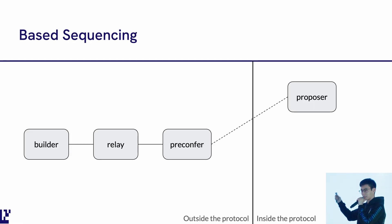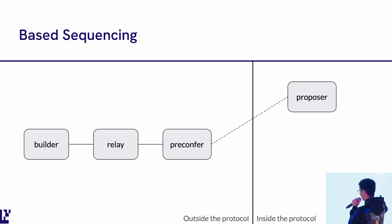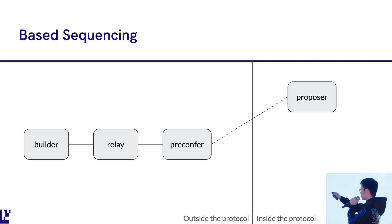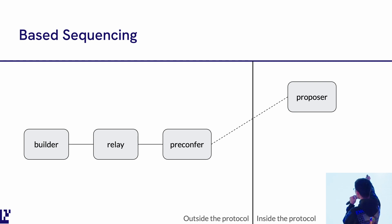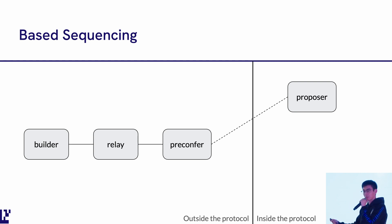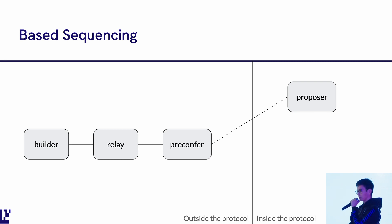So, based sequencing — we talked about this a lot in the early morning sessions. This is a diagram from Justin Drake's slides that I recreated. You have the builder talking to the relay, talking to the pre-confer, who is a new entity. The pre-confer talks to the block and proposer, and the proposer has the ability to pre-confirm certain transactions. The line in the middle divides what's inside the protocol from what's outside, and the dotted line shows communication across in-protocol and out-of-protocol participants.